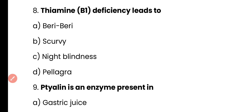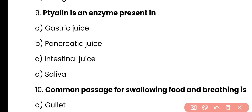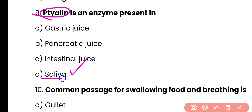Question 8: Thiamine or Vitamin B1 deficiency leads to — beriberi, scurvy, night blindness, or pellagra. Correct answer is option A — Vitamin B1 or thiamine deficiency causes beriberi disease. Question 9: Ptyalin is an enzyme present in — gastric juice, pancreatic juice, intestinal juice, or saliva. Correct answer is option D — ptyalin is also known as salivary amylase and is present in saliva. Its function is to digest starch into maltose and dextrin.